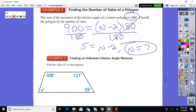Let's see what we've got here. Example 3. Finding an unknown interior angle measure. Find the value of X in the diagram. All right. So now, if we have all the angles except for one, based on the fact that we know what they add up to, we should be able to figure this out. So I've got 1, 2, 3, 4-sided figures.